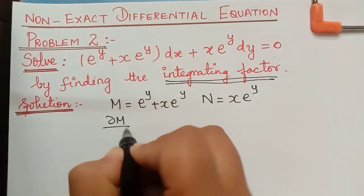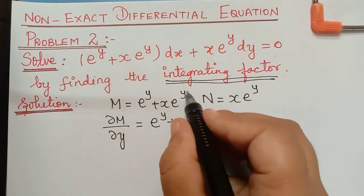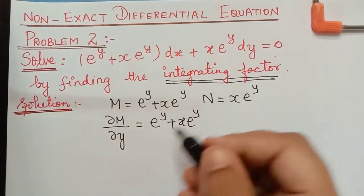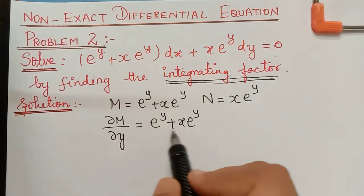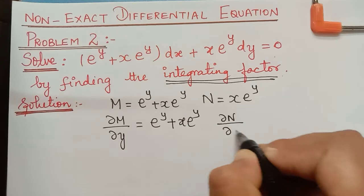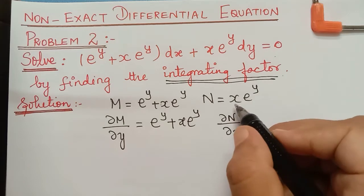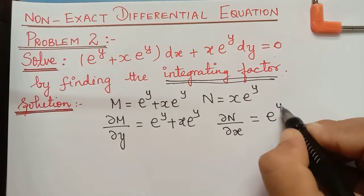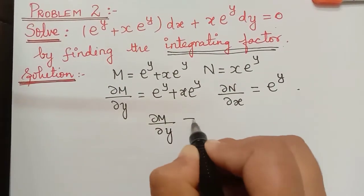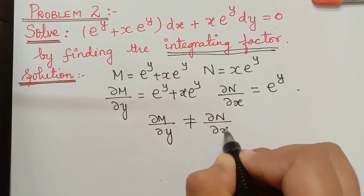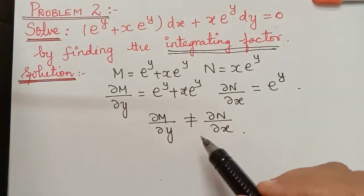∂M/∂y = e^y + x·e^y, since x is treated as a constant and the differentiation of e^y is e^y. And ∂N/∂x: differentiating x·e^y with respect to x gives e^y. We observe that ∂M/∂y is not equal to ∂N/∂x, so this is a non-exact equation. Let us find the integrating factor now.